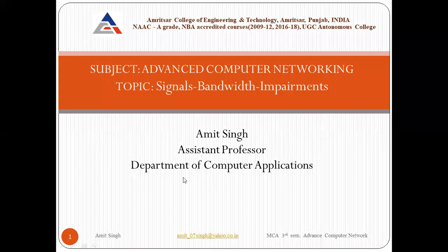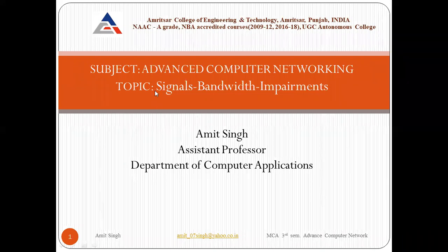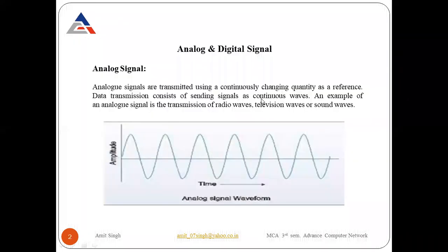Good afternoon students. Today our first topic is signals, bandwidth, and network impairments. Whenever we send data from one end to the other, the data travels in the form of signals. We have two different types of signals available in networks: analog and digital.